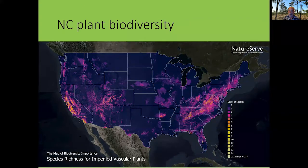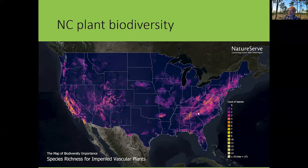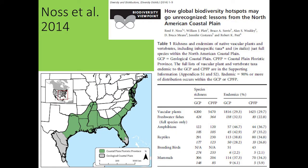Looking specifically at North Carolina, it has really high plant biodiversity with many narrowly distributed endemic and threatened species. On this map, the hot oranges and pinks show very high endemism and imperiled species, concentrated in the southeast — the mountains, Piedmont, and coastal plain. The richness of the coastal plain led Reed Noss and colleagues in 2014 to designate the southeastern coastal plain as a biodiversity hotspot, the 35th so designated in the world.